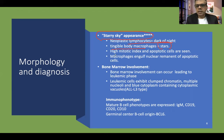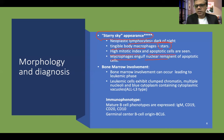The cells are monomorphic but exhibit a very high mitotic index, with a large number of cells undergoing apoptotic transformation. The tingible body macrophages engulf the nuclear remnants of these dying apoptotic cells.